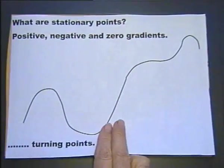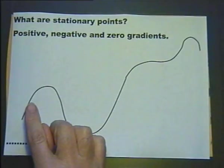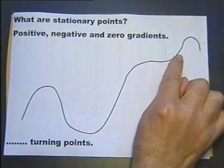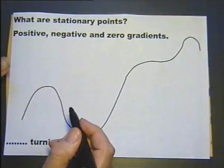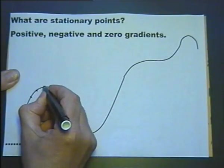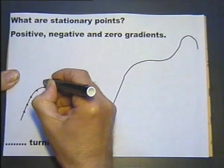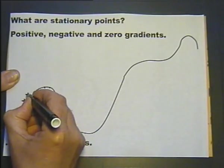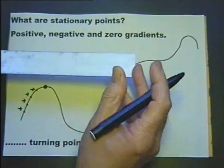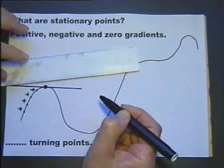First, let's look at what are stationary points. If we consider this graph, the gradient along this graph is continuously changing. If you consider separate points along this graph, the gradient of any tangent drawn to any of these points is a positive gradient. But when we get to this point here, if we were to draw a tangent to that point, the gradient of that point would be zero.